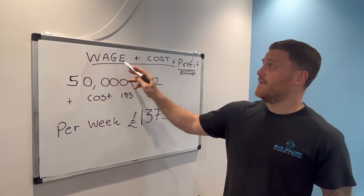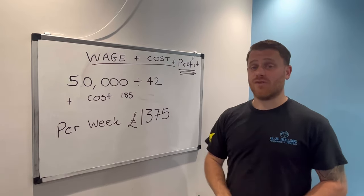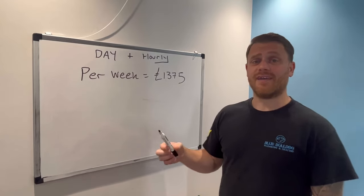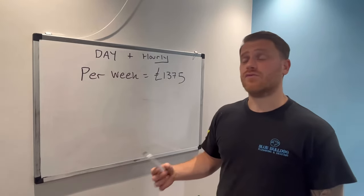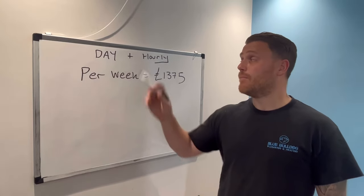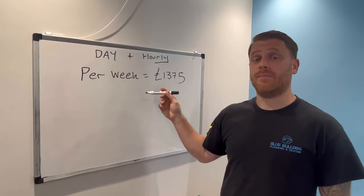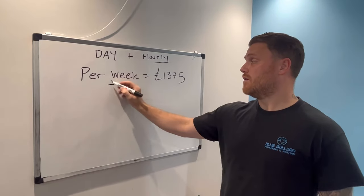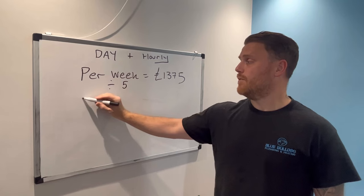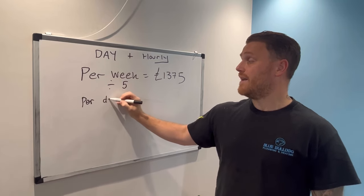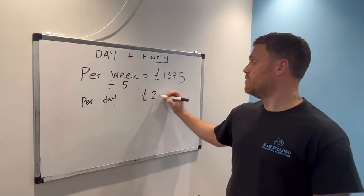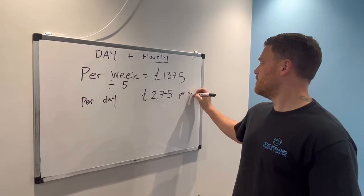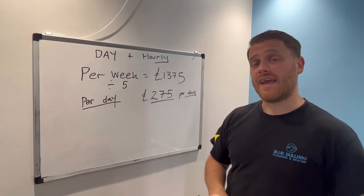So £1,375 per week is what you need to earn to pay yourself a wage, cover your costs, and make a profit. To work out your day rate, simply divide by 5. Based on these calculations, that comes to £275 per day.